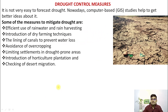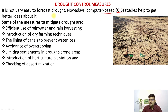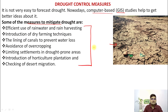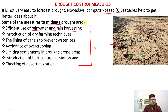Drought control measures include using drought forecasting systems and GIS techniques — computer-aided technologies — to study various aspects of drought and manage the situation. One key measure is efficient use of rainwater and rainwater harvesting. Tamil Nadu is the first state which has made it mandatory to create rainwater harvesting structures on buildings — that is also important.